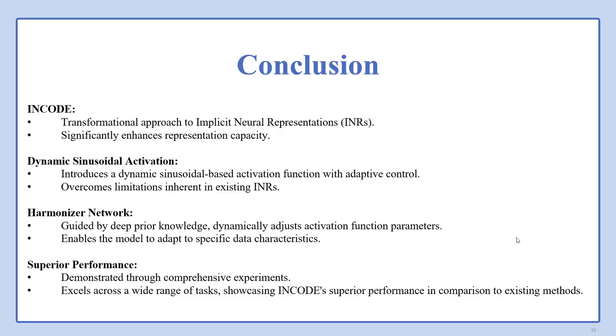In conclusion, we propose ENCODE, which is a transformational approach to implicit representations. It significantly enhances representation capacity and overcomes limitations inherent in existing INRs by dynamically adjusting key parameters of a sinusoidal-based activation function with adaptive control. The harmonizer network, guided by deep prior knowledge, dynamically addresses activation function parameters and enables the model to adapt to specific data characteristics. Through comprehensive experiments, we have shown that ENCODE excels across a wide range of tasks, showcasing superior performance in comparison to existing methods. Thank you very much for your attention.